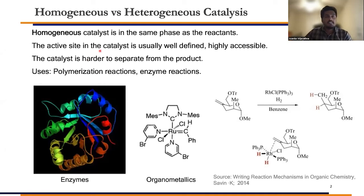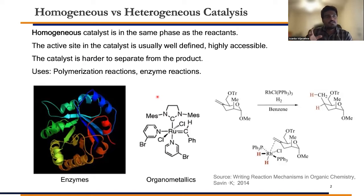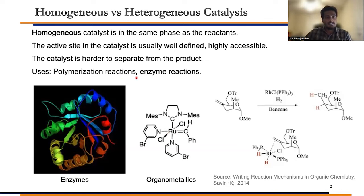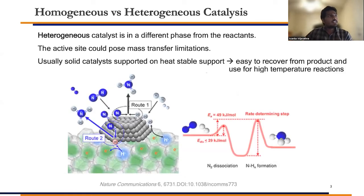A homogeneous catalyst is in the same phase as reactants. You can imagine a liquid phase reaction happening with a soluble catalyst — like this organometallic complex, which can catalyze, for example, olefin hydrogenation. The advantage of this type of reaction is it is well-defined: you know what the structure is, and the catalytic site is highly accessible because it is soluble, so you have very limited — or at least no — mass transfer limitations. Examples include polymerization reactions and enzyme reactions.